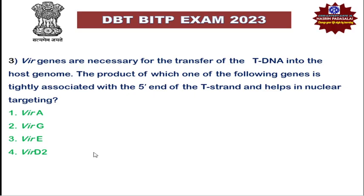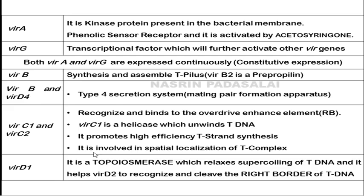Vir genes are responsible and necessary for transferring T-DNA into the host plant genome. The product of the VirD2 gene is tightly associated with the five-prime end of the T-DNA and helps in nuclear targeting. So VirD2 is responsible — it will be tightly associated with the five-prime end of the T-DNA and carries the nuclear localization signal.